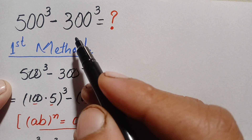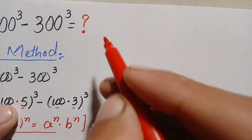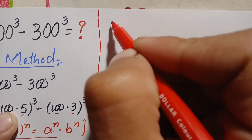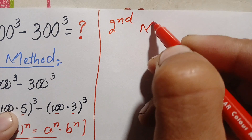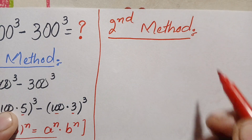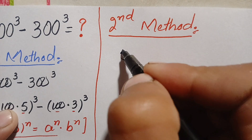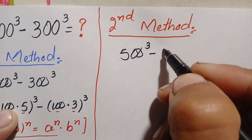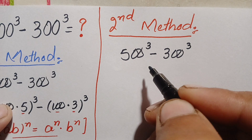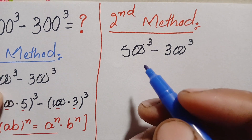Now we will solve this beautiful and amazing cubic math problem using the second method. The problem is again 500 cubed minus 300 cubed. In the second method we will use the cubic algebraic identity: a cubed minus b cubed.